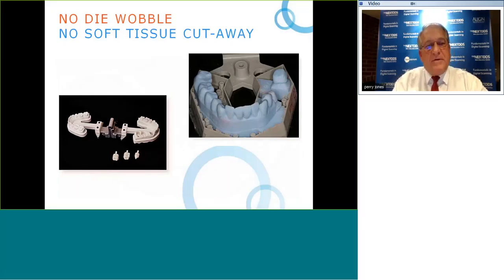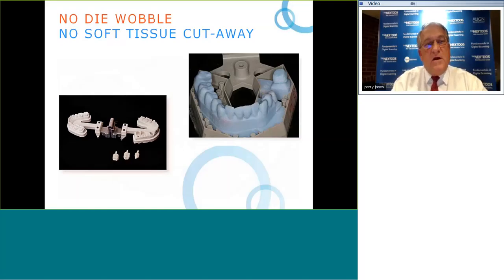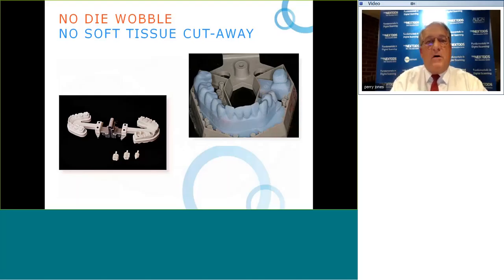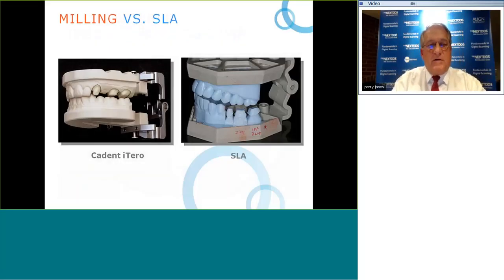Your local lab can work with the same methodology as before — using dies for the restorations you're used to doing. This allows full coverage crowns, porcelain fused to metal restorations, done on very accurate wobble-free dies that can be inserted and removed multiple times while maintaining accuracy. A second feature: with milled models, unlike 3D printed models, there is no soft tissue cutback necessary.